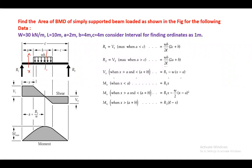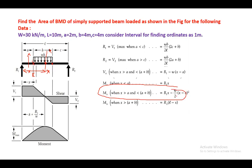Similarly, consider one more section in the B portion — between A and B — where the bending moment equation is different. Just like in strength of materials, bending moment at X = R1·X minus the moment due to the distributed load on the left, which is W/2 × (X − A)².